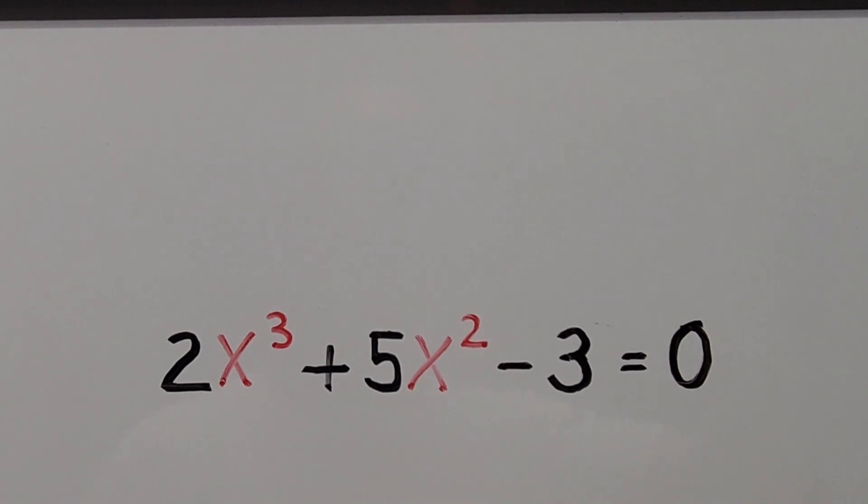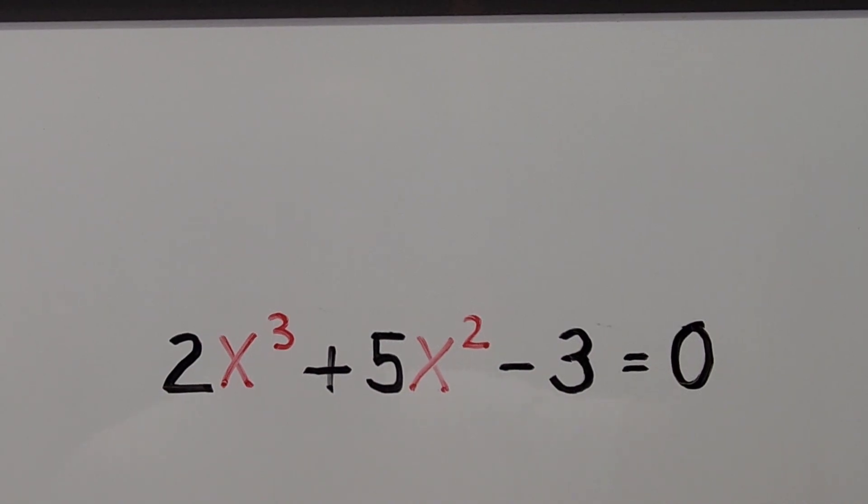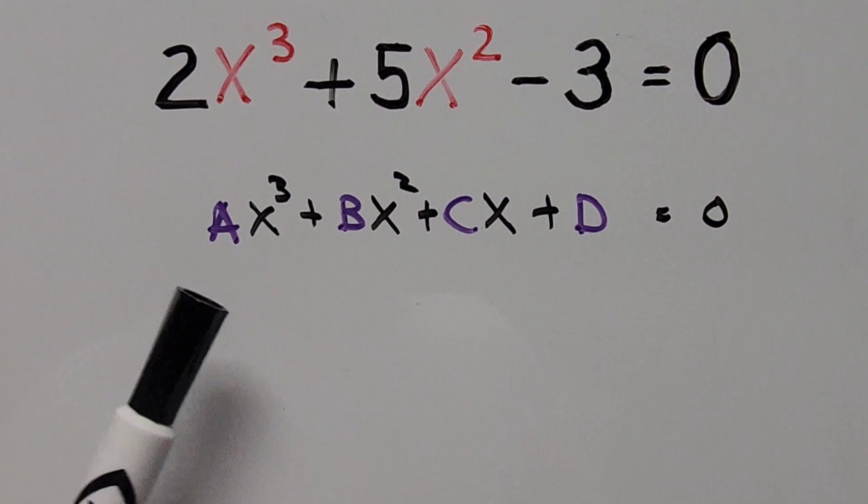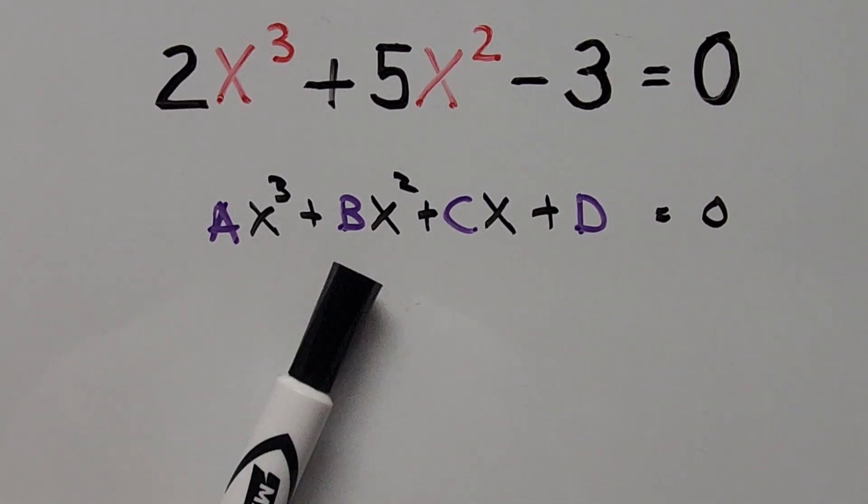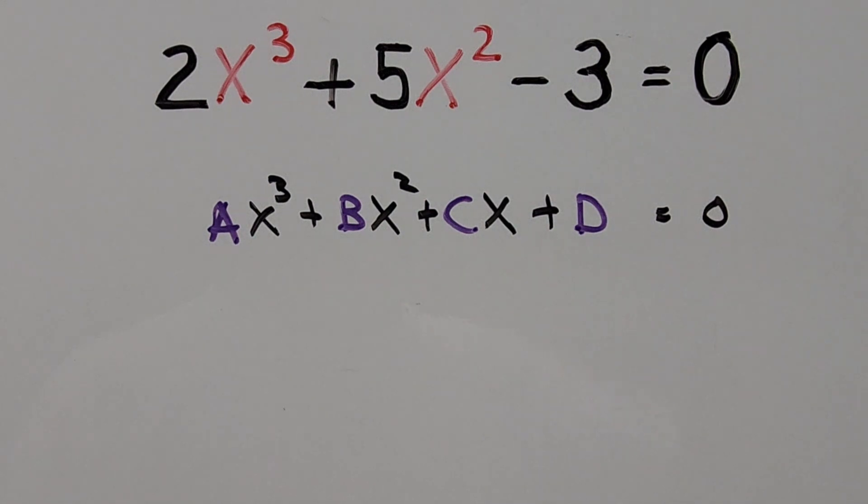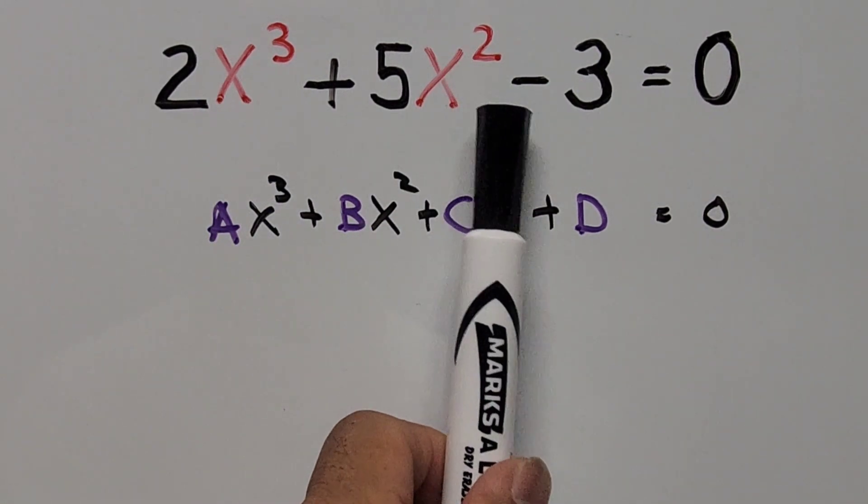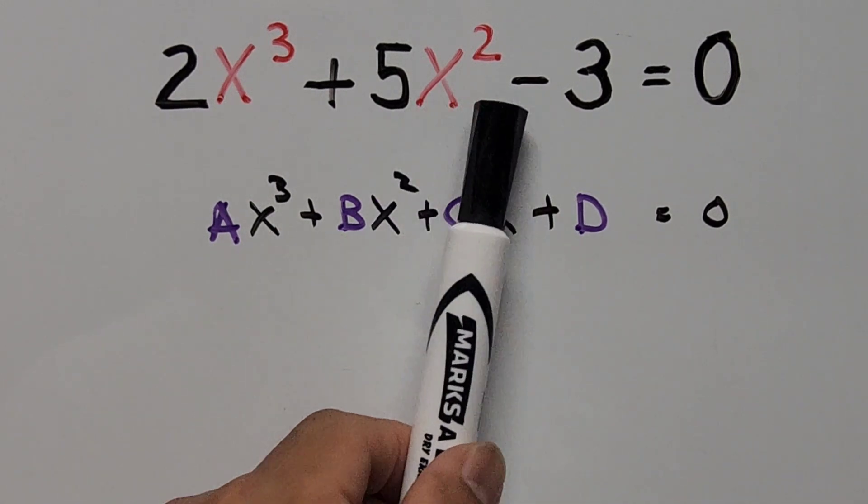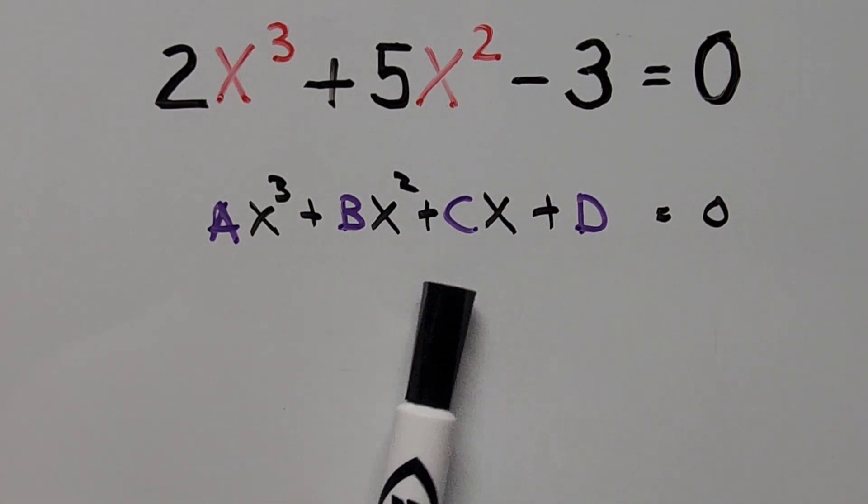And so let's go ahead with our solution. First we have to make sure that the cubic equation is on its standard form: Ax³ + Bx² + Cx + D = 0. And if we look at our equation, we're missing one term that's in the form of x, right?